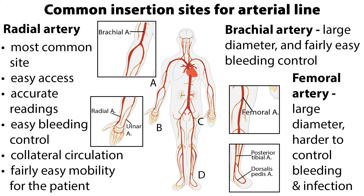The disadvantages of the radial artery are the small diameter making it difficult to insert, and possible nerve damage or thrombosis. The advantages of the brachial artery are the large diameter making it easier to insert and fairly easy bleeding control.